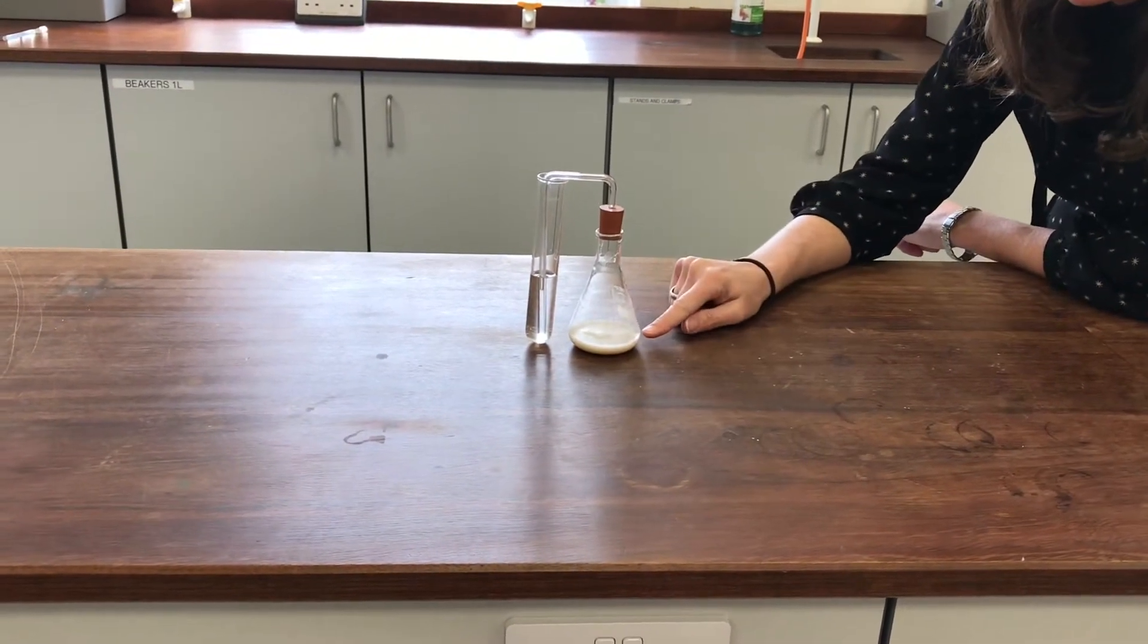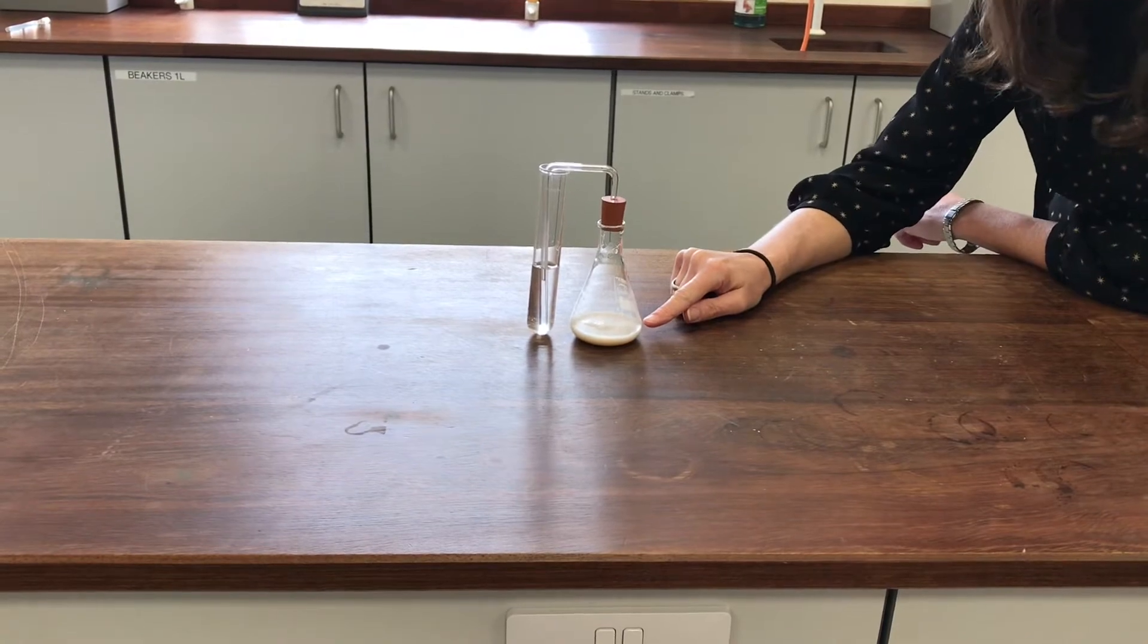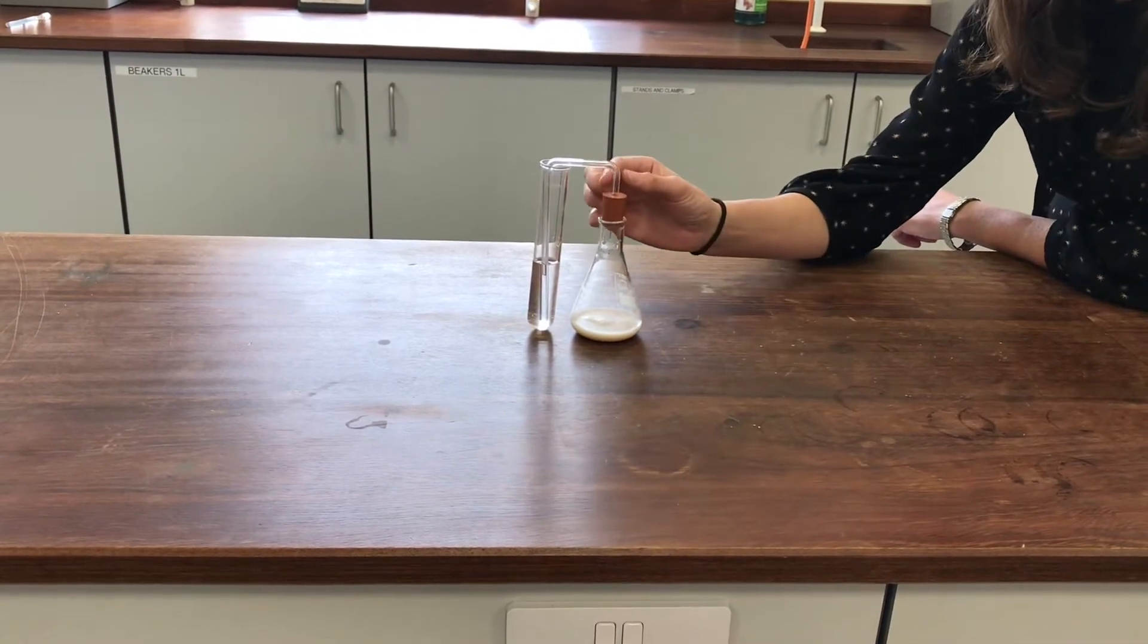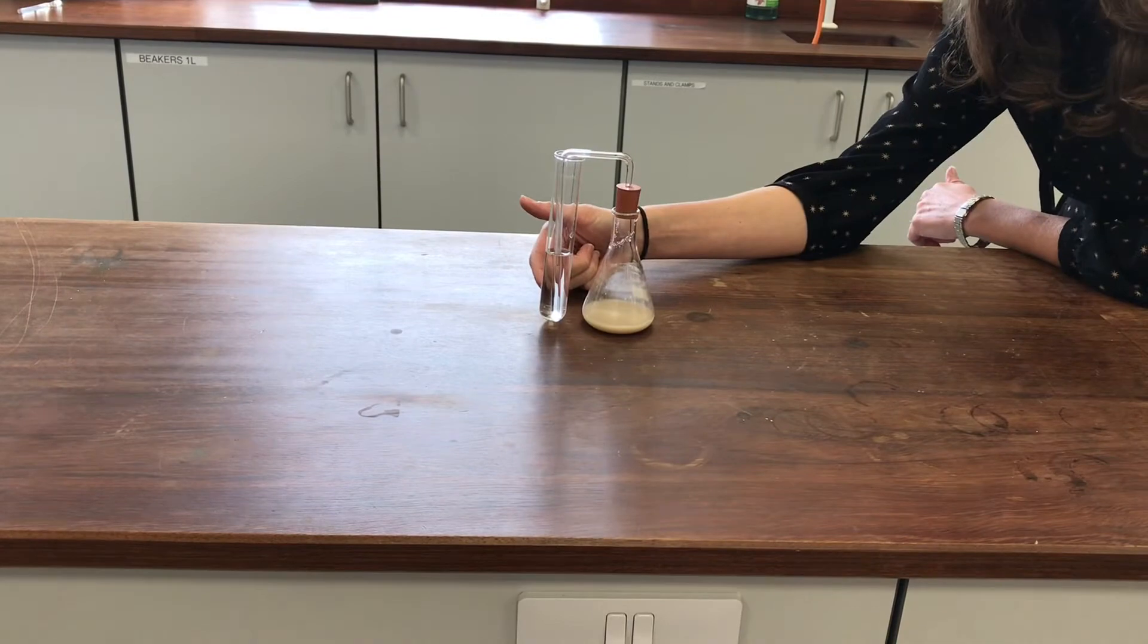In the conical flask at the bottom here, I've got a solution of sugar and I've put some yeast in it as well. And you can see there's a bung in it with a delivery tube and this is going into some lime water here.